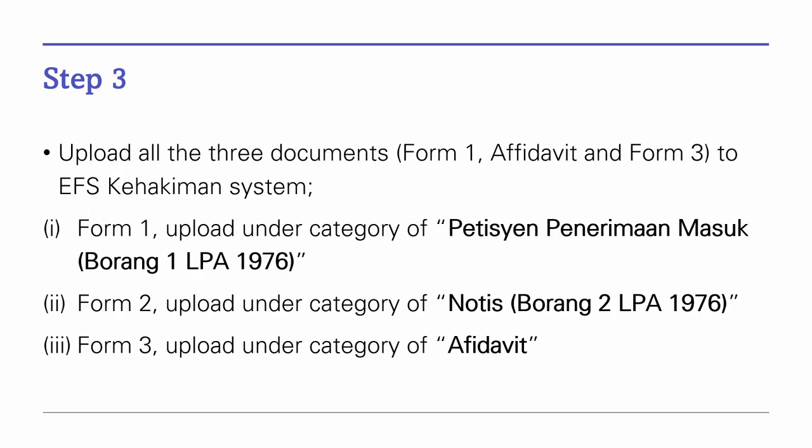Step 3: By now you already have all your Forms 1, 2, and Affidavit prepared with all the details and the stamping by the Commissioner of Oath. It is really important to immediately file them on the same day at the EFS Kahakiman and upload all the documents into the system. For Form 1, upload it under the category of 'Petisyen Penerimaan Masuk Borang 1 LPA 1976'. For Form 2, upload it under 'Notis Borang 2 LPA 1976'. For the Affidavit, upload it under 'Affidavit'.